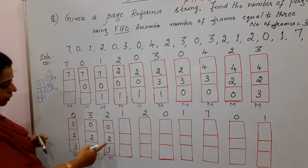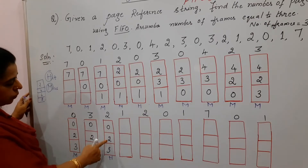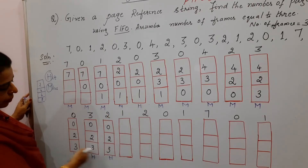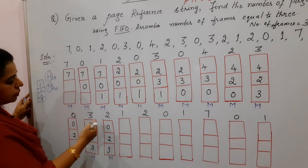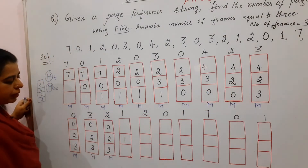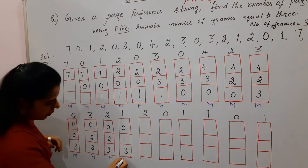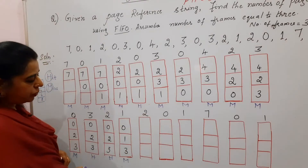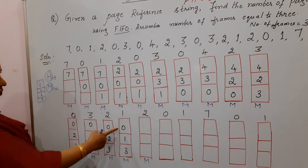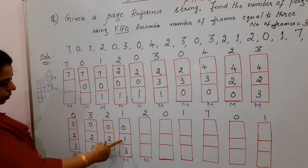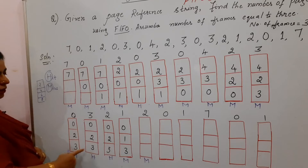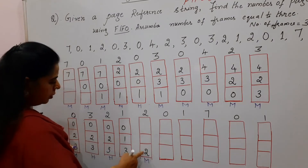Page 2 is not there — miss, write M. Out of 0, 3, 1 — page 3 is the oldest (appeared most in previous frames). Replace 3 with 2; keep 0 and 1 as is. Page 0 is already in main memory — hit, write H. Page 1 is already there — hit, write H.